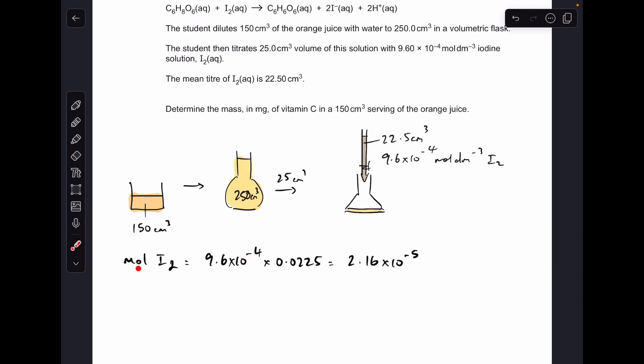The first thing we can do is work out the moles of iodine: concentration times volume, but remember it's got to be in decimeters cubed, so 2.16 times 10 to the minus 5. We've got a nice one-to-one ratio in the equation for the titration, so the moles of vitamin C in that 25 cm³ used in the titration is exactly the same.